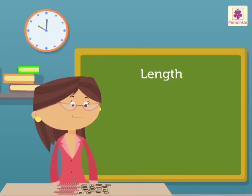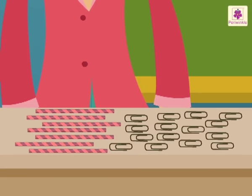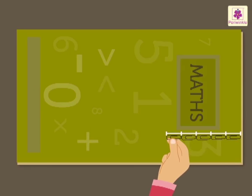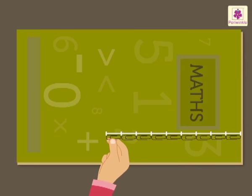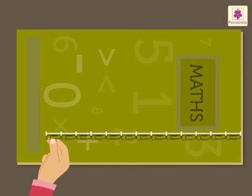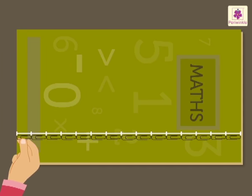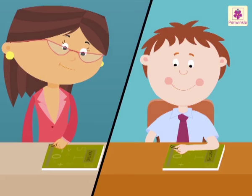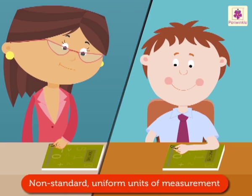Kids, now let us use paper clips and straws to measure a few objects. The length of this book is 15 paper clips, and the breadth of the blackboard is 4 straws. Anyone measuring these objects with the same paper clip and same straw will get the same answer. Hence, paper clip and straw are examples of non-standard, uniform units of measurement.